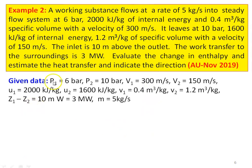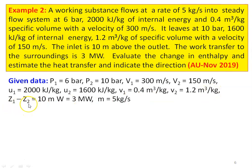Given data: P₁ = 6 bar, P₂ = 10 bar, V₁ = 300 m/s, V₂ = 150 m/s, U₁ = 200 kJ/kg, U₂ = 1600 kJ/kg, specific volume at inlet v₁ = 0.4 m³/kg, specific volume at outlet v₂ = 1.2 m³/kg, Z₁ − Z₂ = 10 m, work done W = 3 MW, mass flow rate M = 5 kg/s.